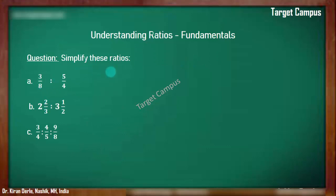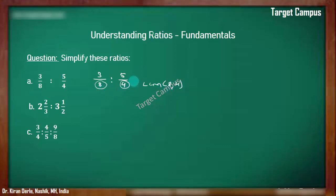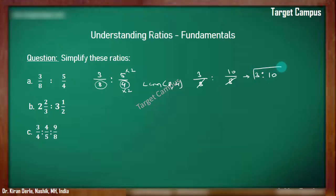Simplify these ratios. First example: 3/8 is to 5/4. While simplifying this fractional ratio, we must make the denominators equal by taking the LCM of 8 and 4, which is 8. We multiply 5/4 by 2 to get 10/8. So the ratio becomes 3/8 is to 10/8. Now denominators are the same, so we take the ratio of the numerators: the final ratio is 3 is to 10.